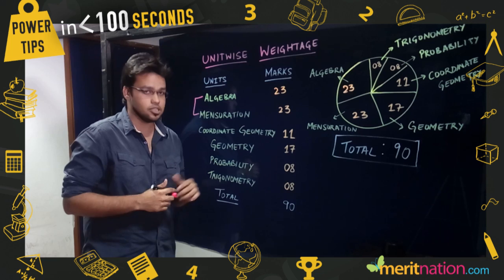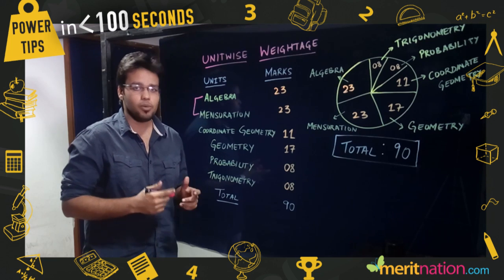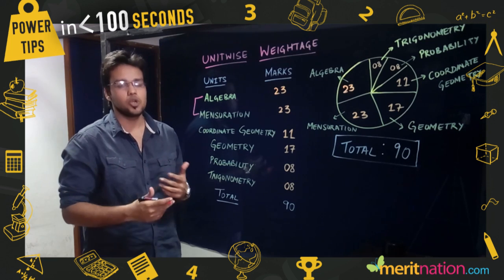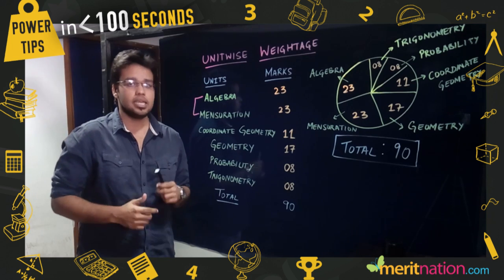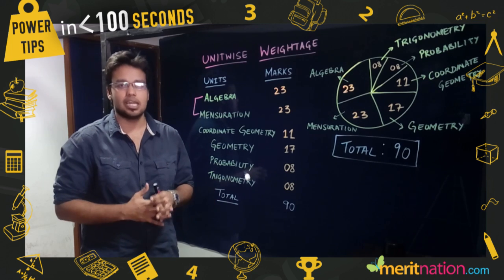Another important unit is geometry. It involves circles and construction. In circles, you can expect a four mark question on a proof which involves congruency, especially the RHS congruency. In constructions, please practice the three specified constructions in the class.